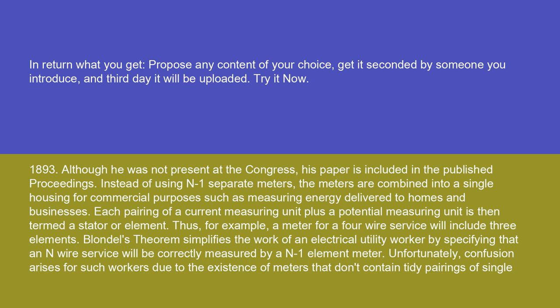Instead of using N separate watt meters, the meters are combined into a single housing for commercial purposes, such as measuring energy delivered to homes and businesses. Each pairing of a current measuring unit plus a potential measuring unit is then termed a stator or element. Thus, for example, a meter for a four-wire service will include three elements. Blondel's theorem simplifies the work of an electrical utility worker by specifying that an N-wire service will be correctly measured by an N-minus-one-element meter.